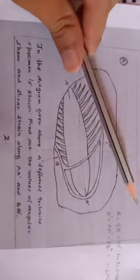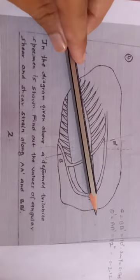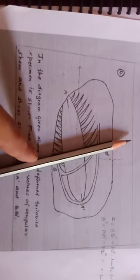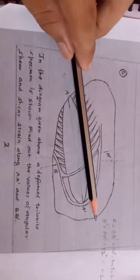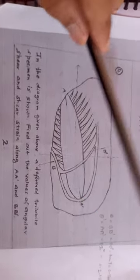If we join A and A', it looks like something like this, and B and B' looks like something like this. In this condition, this is the condition of deformed trilobite.